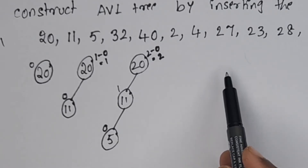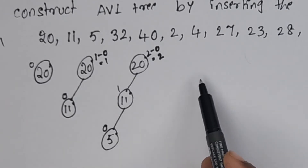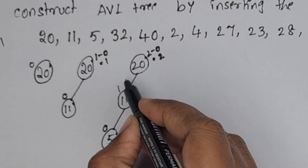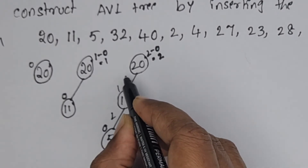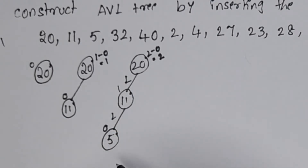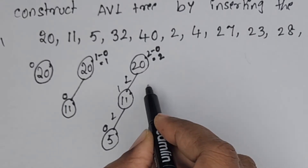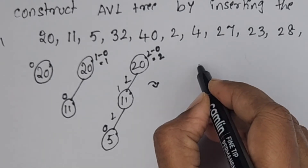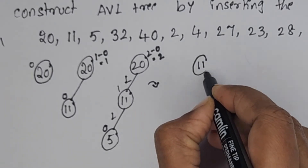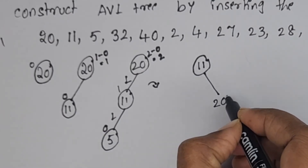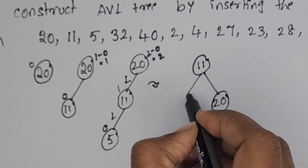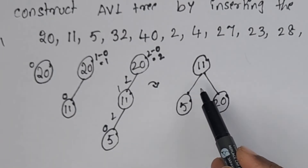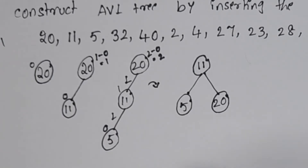If the tree is unbalanced, we have to balance it. Now, which rotation do we perform? Since 20 is unbalanced because of adding 5, and we added on the left-left side, we perform LL rotation — that is, a single right rotation. When you perform the right rotation, the middle node becomes root: 11 becomes root, 20 goes down and becomes the right child of 11, and 11's left child is 5. After rotation, all balance factors are 0, so the tree is balanced.